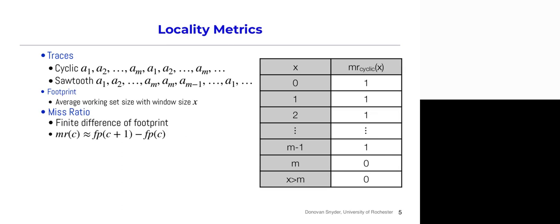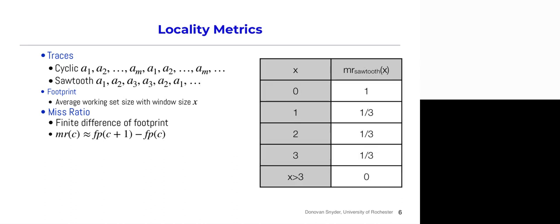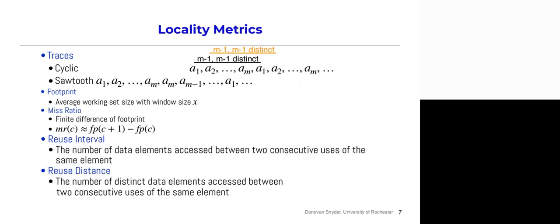Now if we look at the miss ratio — approximately a finite difference for the footprint — the ratio of misses to hits shows that for the cyclic trace, with any cache smaller than m (assuming LRU), we will never get a hit because no data will be recently used until we reach cache size m, when all data is contained in the cache and everything becomes a hit. For the sawtooth trace it's a bit more difficult, but it goes down by one-third because a cache size of two would produce a hit, and this continues for larger data sizes.